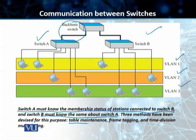We have three methods that we normally use for switches sharing VLANs to know the membership status of stations connected to the other switch. The first is called table maintenance, in which each switch uses a technique to maintain a table and they also ping the other switches. Based on that, they update their tables. When a station sends a broadcast frame to its group members, the switch creates an entry in the table and records the station membership as well.